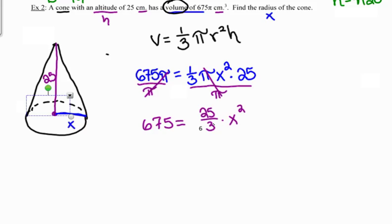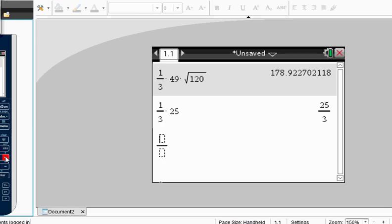Now to undo multiplying by the fraction 25 thirds, I can either divide by the fraction 25 thirds, or I might be classier and multiply by the reciprocal. If I multiply by the reciprocal on the right, I need to multiply by the reciprocal on the left. So the right side of this equation is pretty easy. The 3 25ths and the 25 thirds, when I multiply these together, I end up with 1 times x squared. And then I've got to multiply the 3 25ths times the 675.